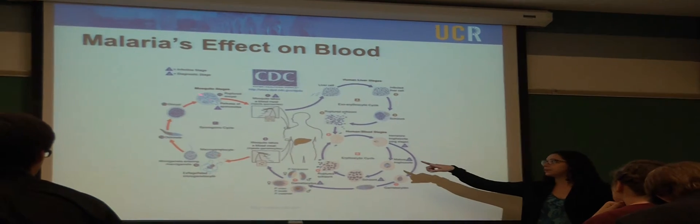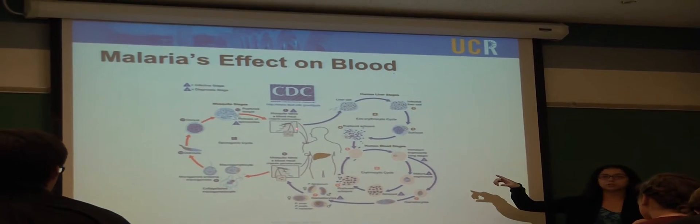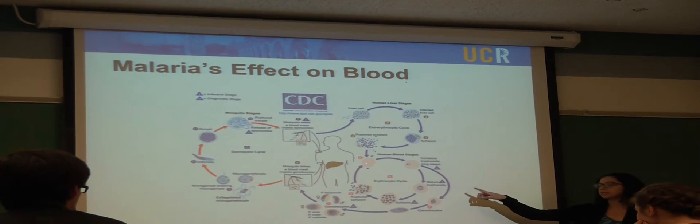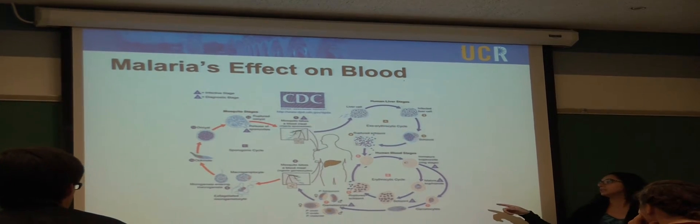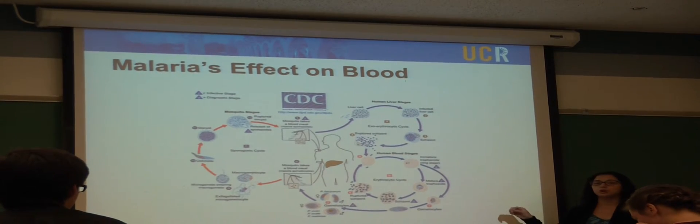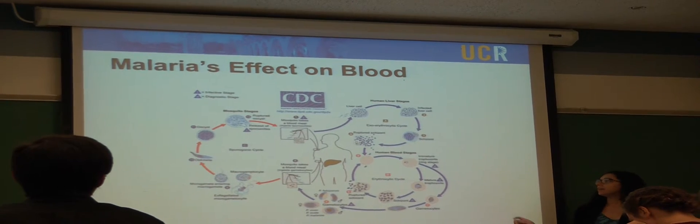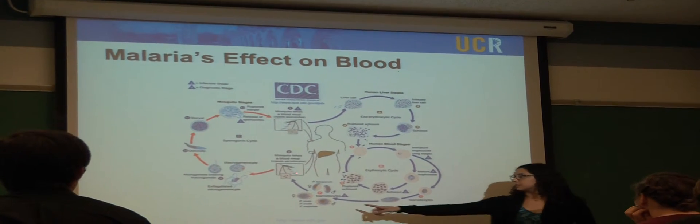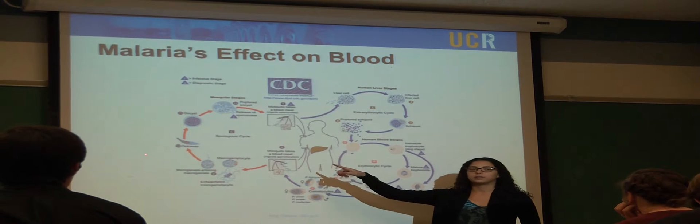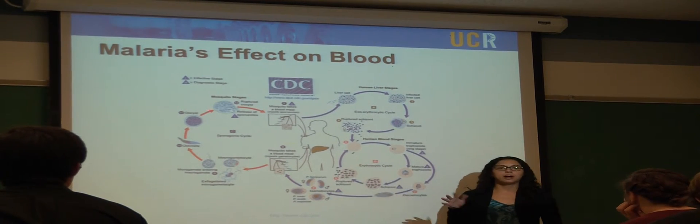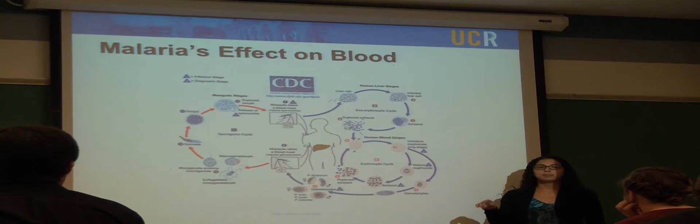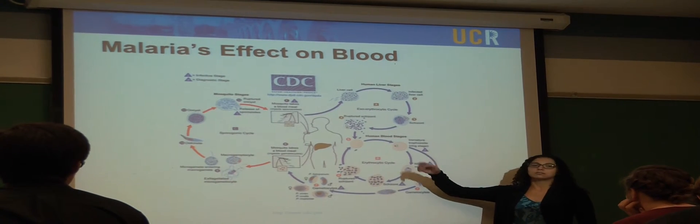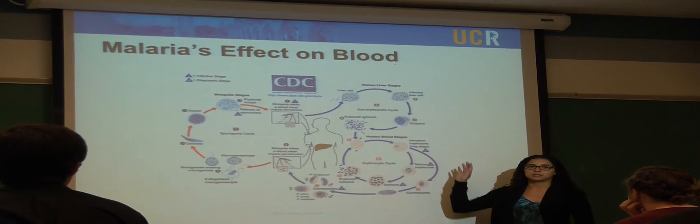An infected mosquito first will bite a human, and the parasite will grow and multiply first in the liver cells and then the red blood cells, where the parasite will grow and destroy the red blood cells and release daughter parasite cells, which will continue to go and destroy other red blood cells. When another mosquito comes and bites an infected human, the gametocytes get transferred to the mosquito and then another cycle continues. After about 10 to 18 days, the parasite is found in the salivary glands of the mosquito, and when it bites another human, the parasite goes into the human again, and this whole process continues.